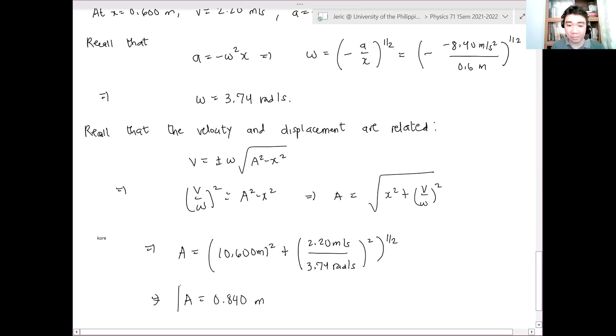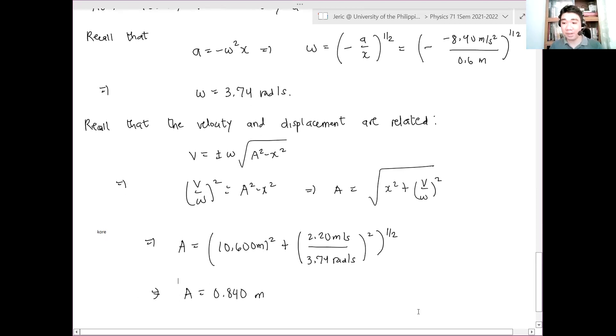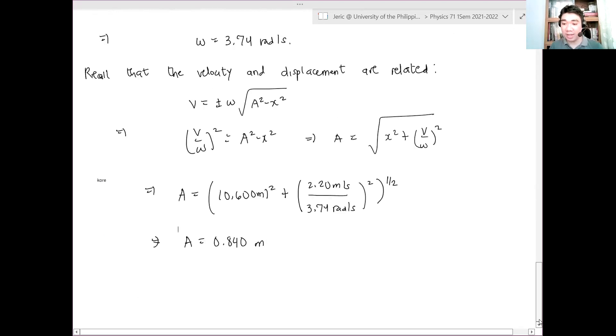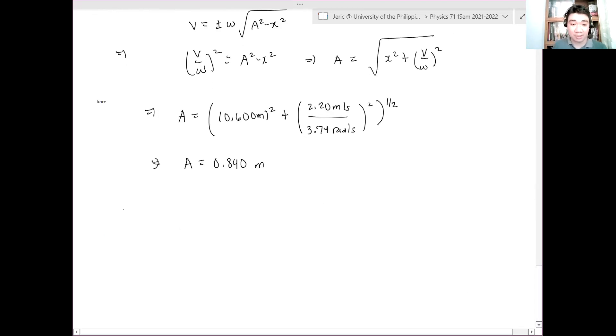This is what we want. Actually, this is not yet what we're looking for because the amplitude is what we want, but what's actually needed to be determined in this problem is what we need to determine is the distance from x to a. And therefore, we just need to subtract a minus x, which is simply 0.840 meters minus 0.600 meters.